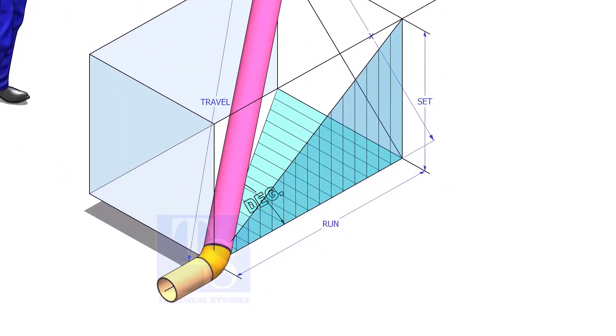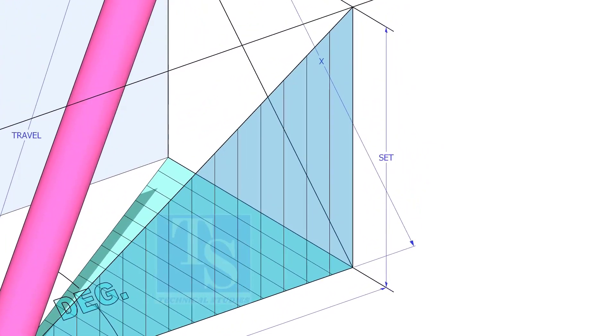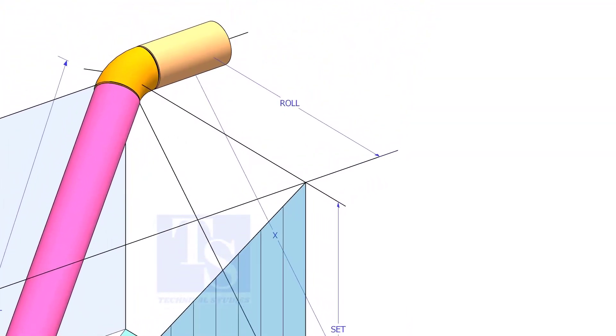In this video, I will show you how to calculate the travel length and the including angle of a double rolled offset pipe.